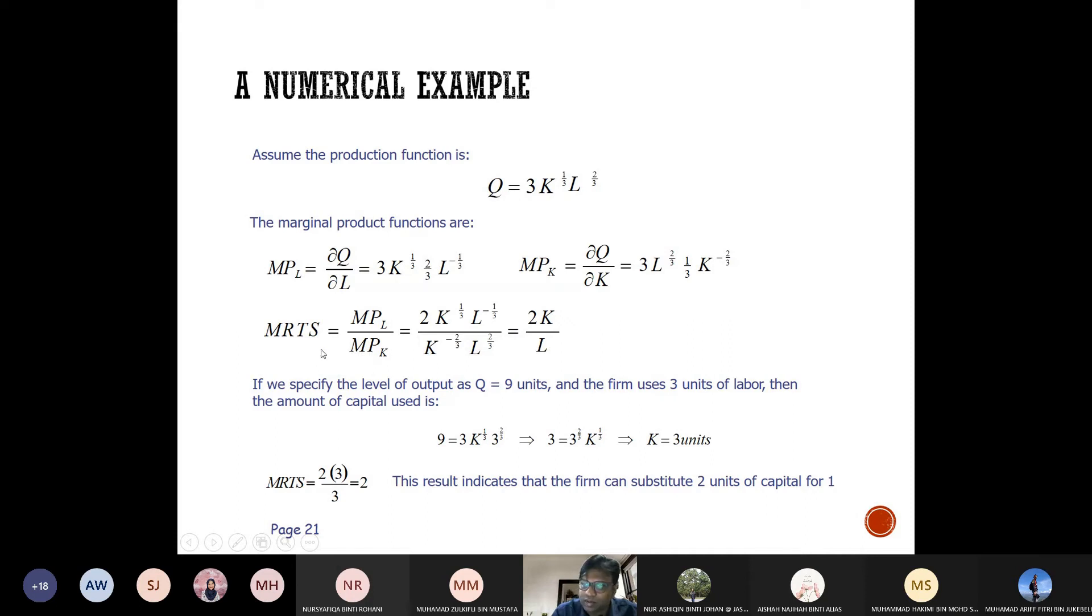Then you're able to find the MRTS based on MPL/MPK. Substitute the respective figures, simplify, and you get 2K/L. This is the sort of question or problem you will be approaching in your exams. The questions are pretty much similar to this - you just need to know how to do partial derivative calculus.